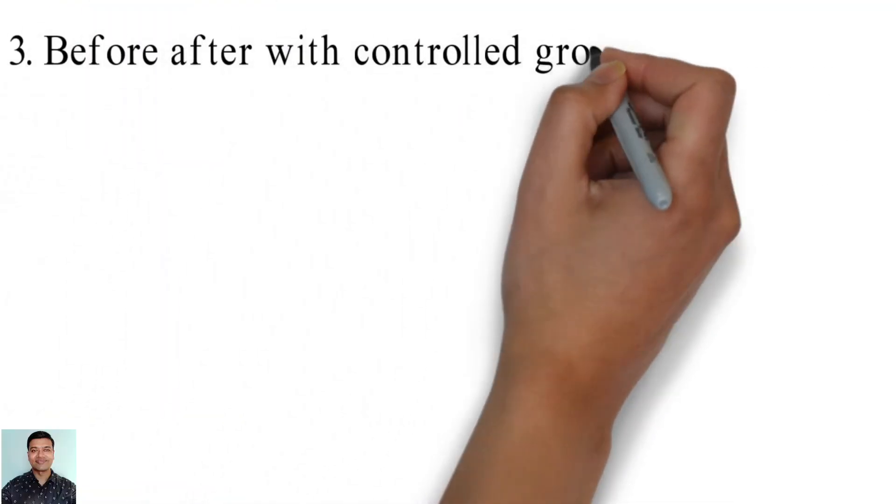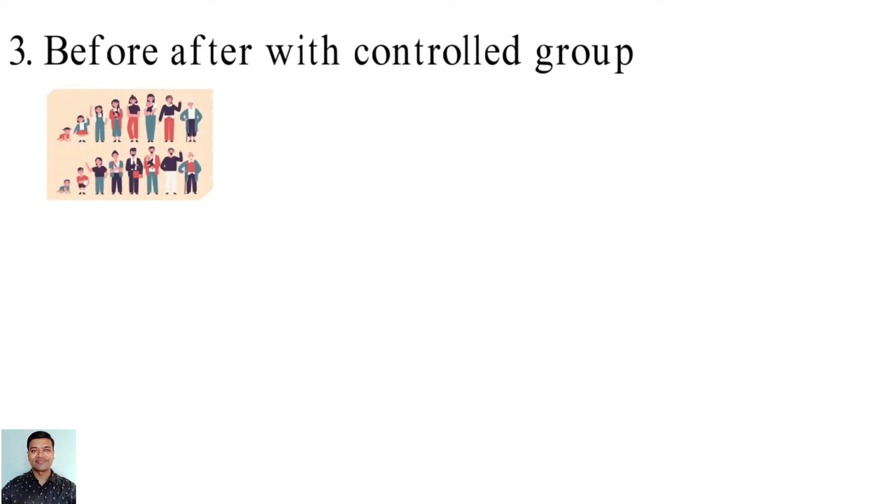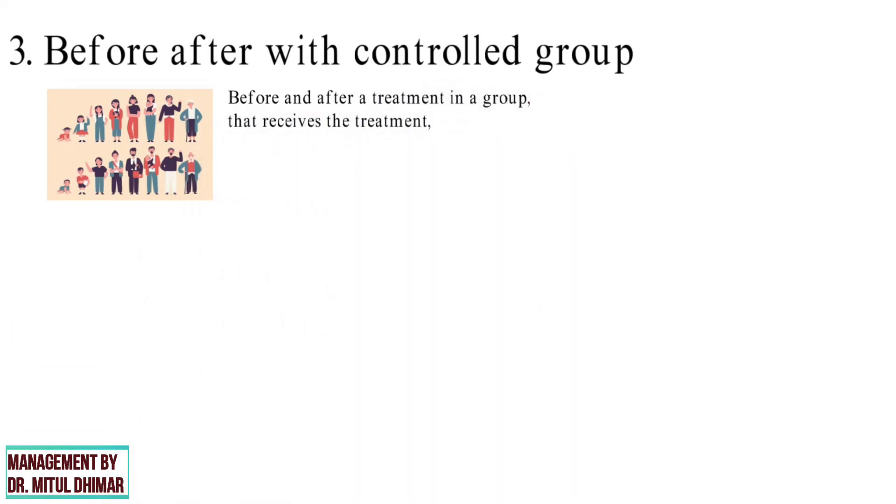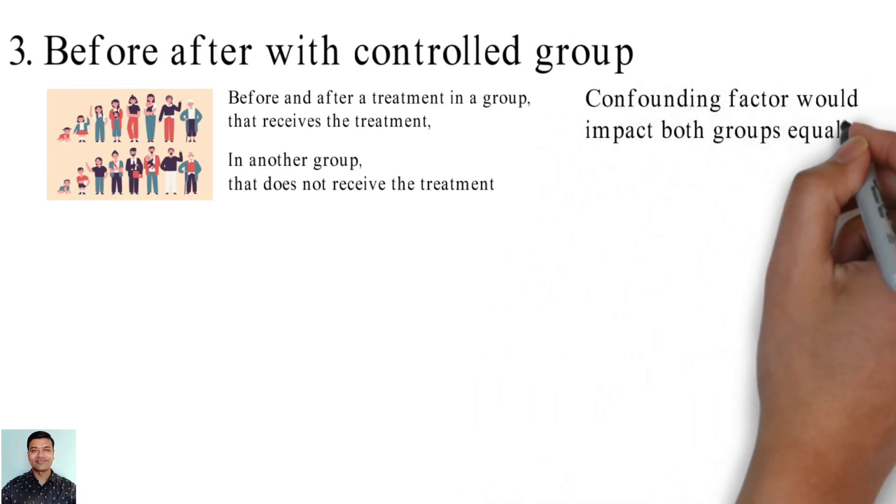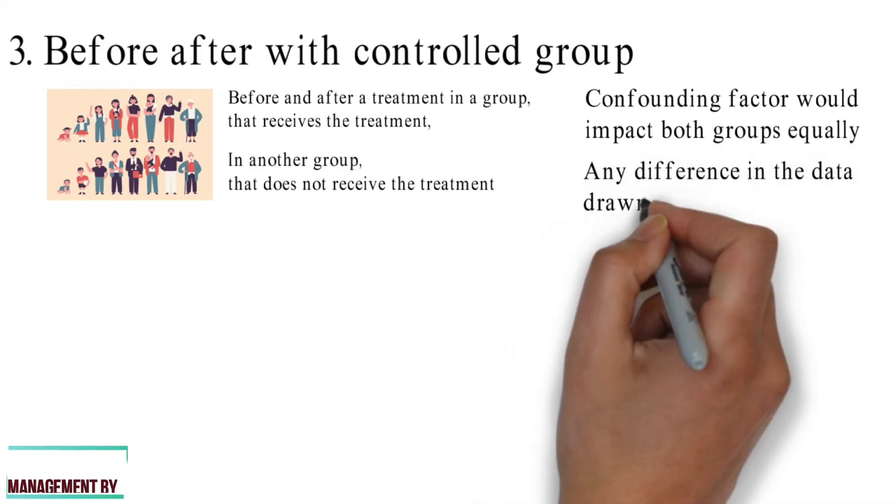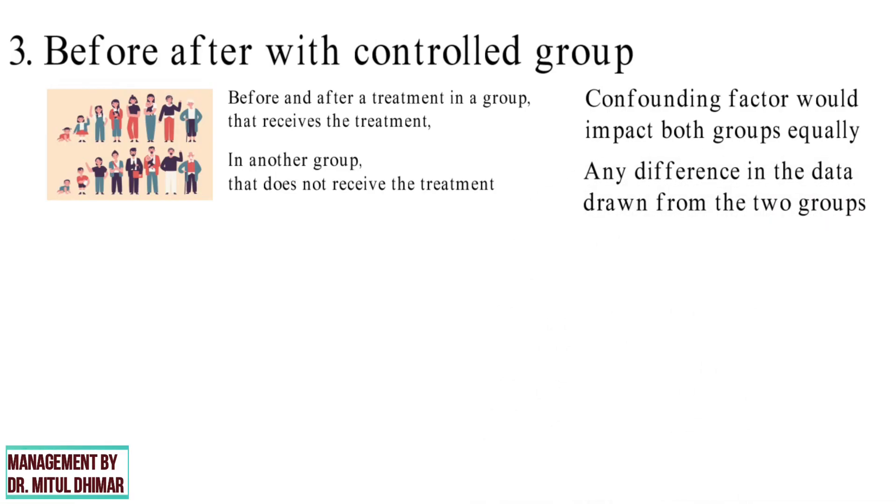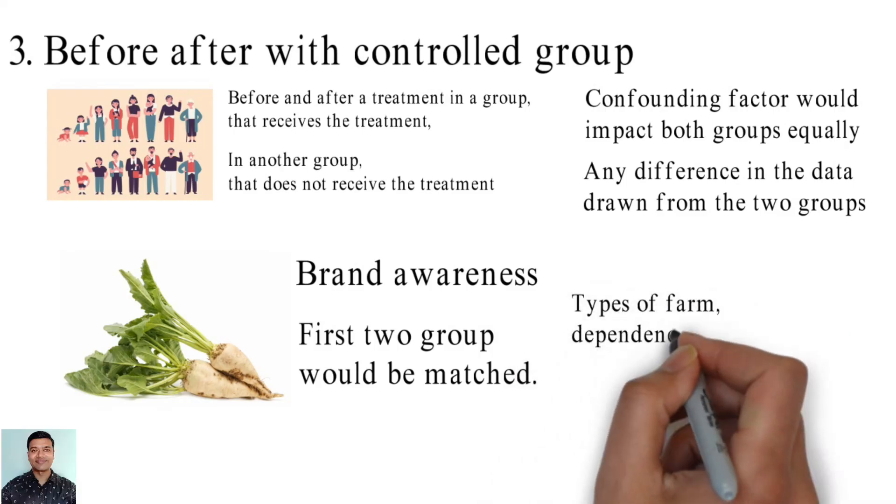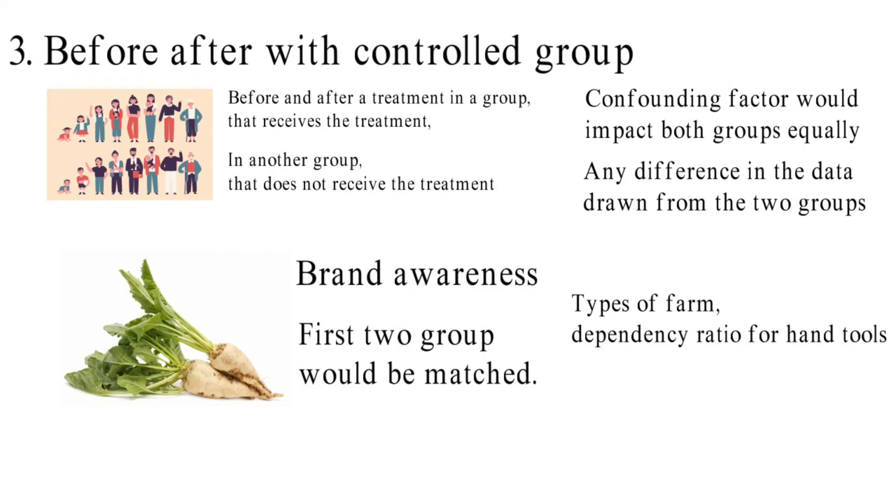Number three. Before after with controlled group. In controlled before after studies, outcomes are measured before and after a treatment in a group that receives the treatment and in another group that does not receive the treatment or that receives a different treatment. The idea is that any confounding factor would impact both groups equally and therefore any difference in the data drawn from the two groups can be attributed to the experimental variable. For example, measurement of impact of a sugar beet seed production on brand awareness. First two groups would be matched. Attributes such as types of farm, dependency ratio for hand tools, etc. would match with each group. So that the groups are interchangeable for the purpose of the test.